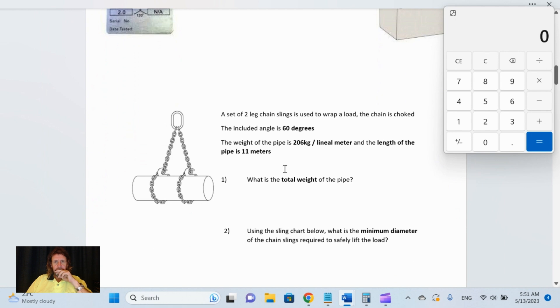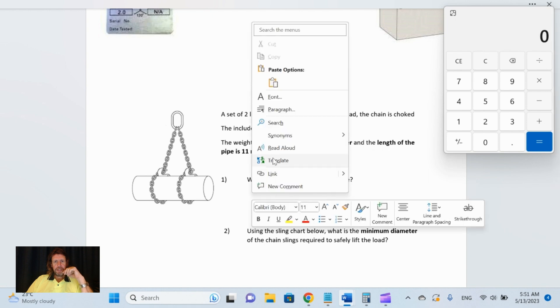Next: a set of two-leg chain slings is used to wrap a load. The chain is choked. The included angle is 60 degrees. The weight of the pipe is 206 kilograms per lineal meter and the length of the pipe is 11 meters. What's the total weight of the pipe?